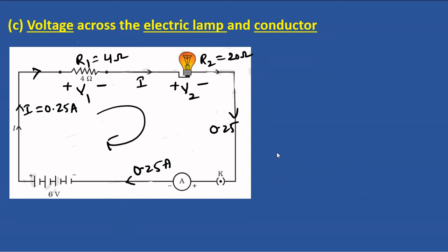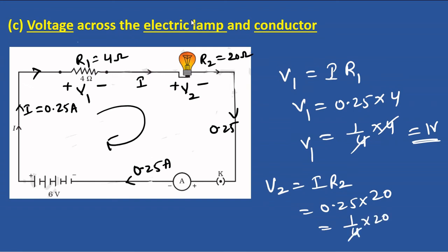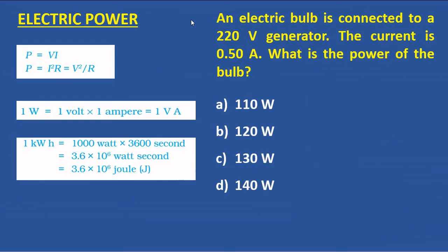Now find the voltage across each component. Current flows from higher to lower potential. V1 = I × R1 = 0.25 × 4 = 1 volt. V2 = I × R2 = 0.25 × 20 = 5 volts. So V1 = 1 volt and V2 = 5 volts.